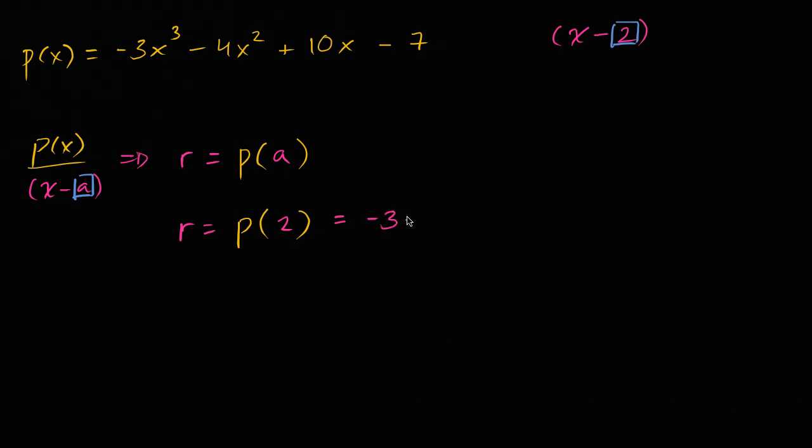Negative three times eight, minus four times four, plus twenty, minus seven. So let's see, this is negative twenty-four, minus sixteen, plus twenty, minus seven.